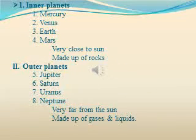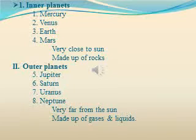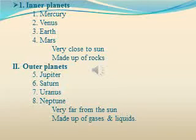All the planets in our Solar System can be divided into two categories: inner and outer. The inner planets are Mercury, Venus, Earth, and Mars. These are very close to the Sun and made up of rocks. The outer planets are Jupiter, Saturn, Uranus, and Neptune. These are far from the Sun and made up of gases and liquids.